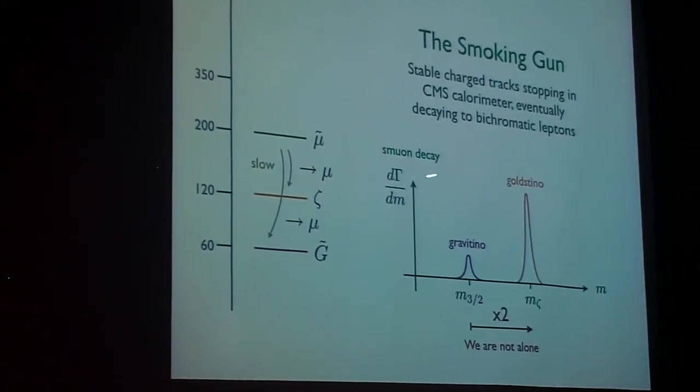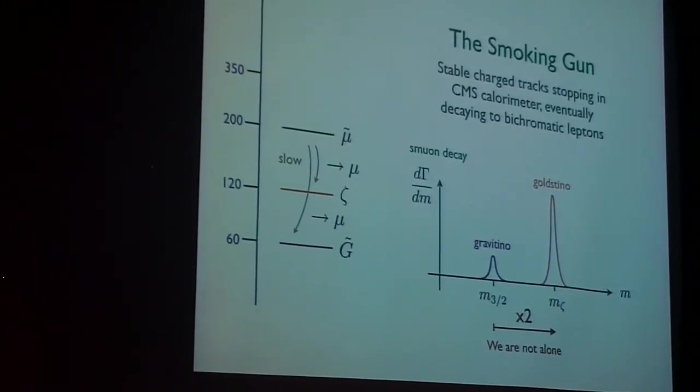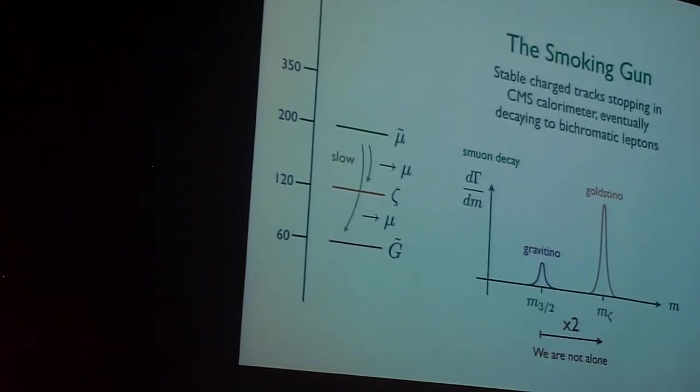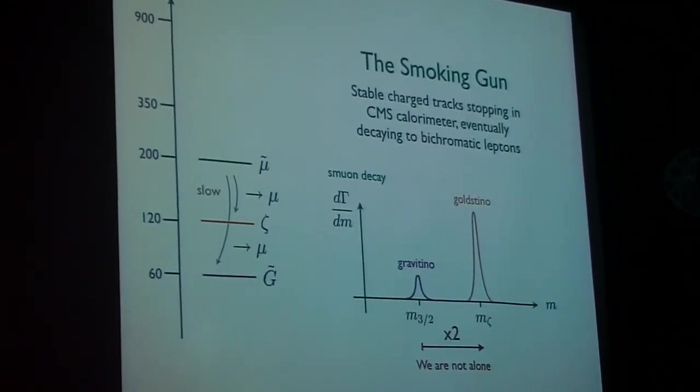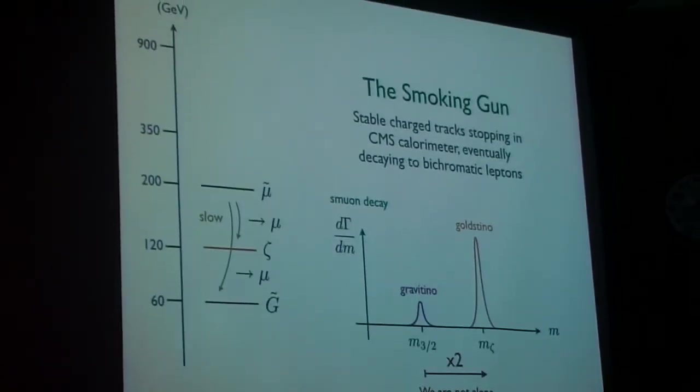A measurement of this, a measurement of the differential spectrum in smuon decay, would give you amazing information about the structure of our universe. Not only that the universe is supersymmetric, but there's hidden sectors out there. So we are not alone.